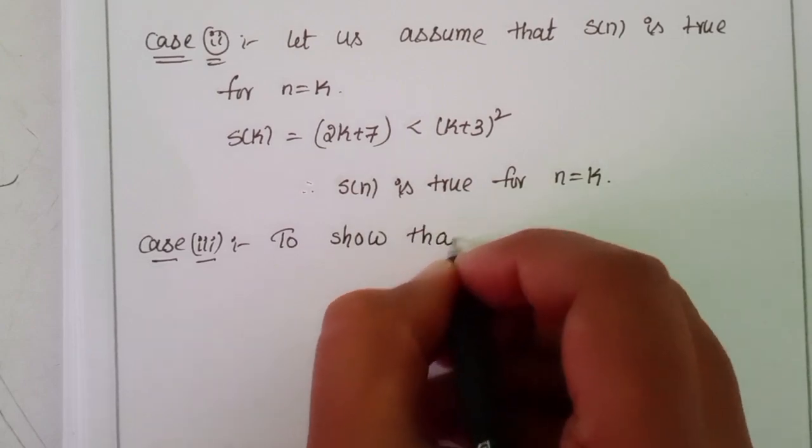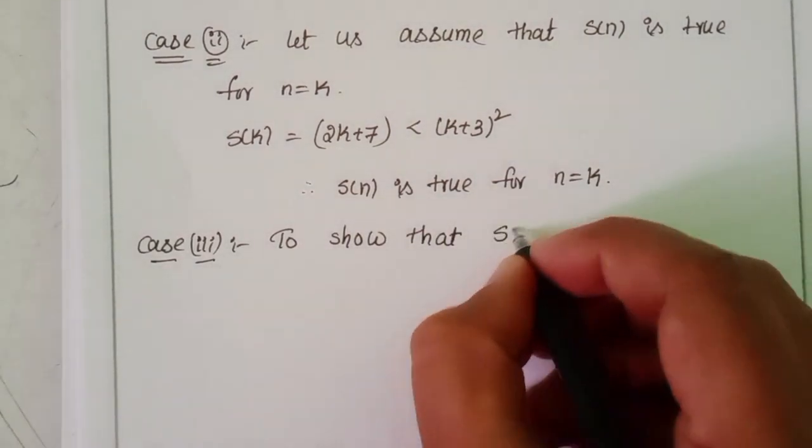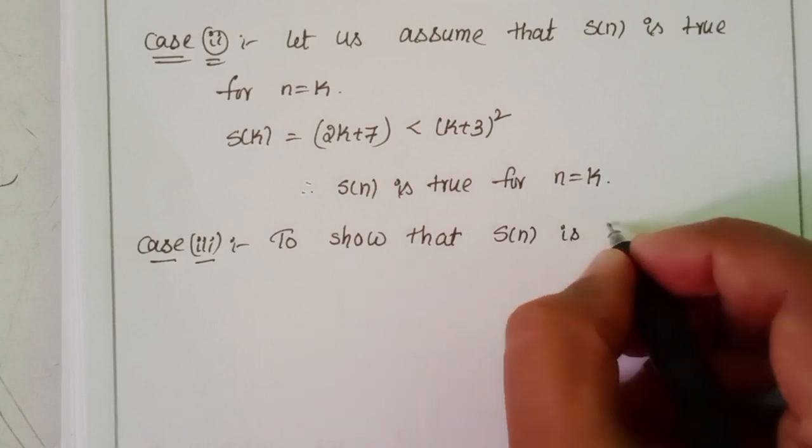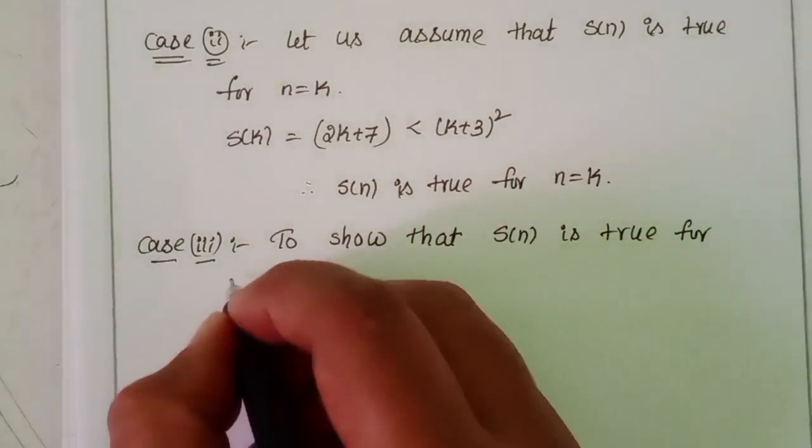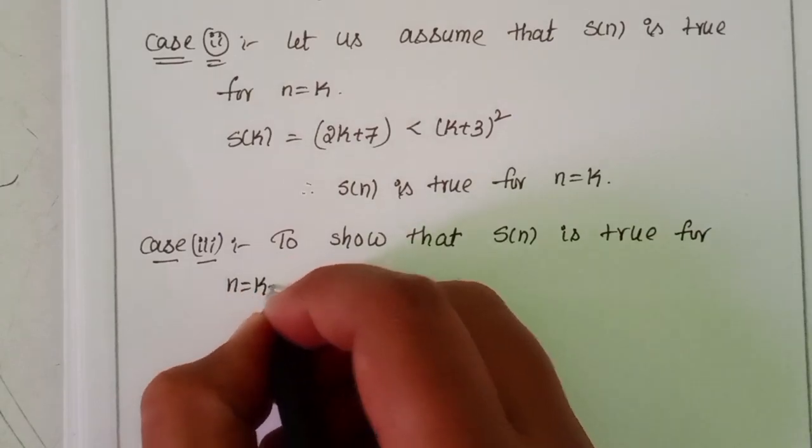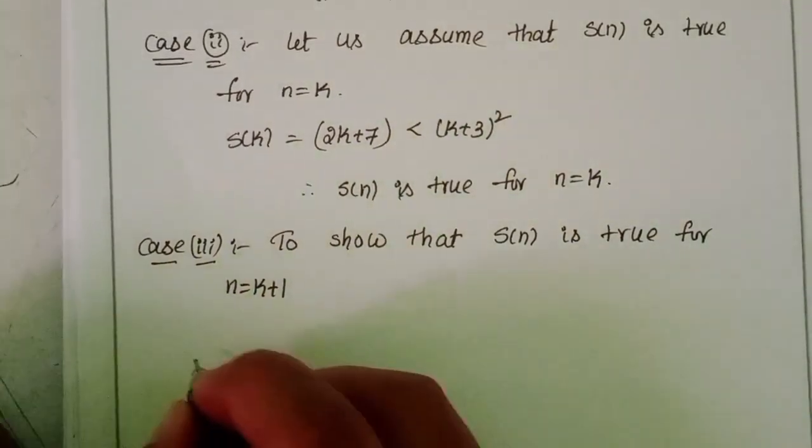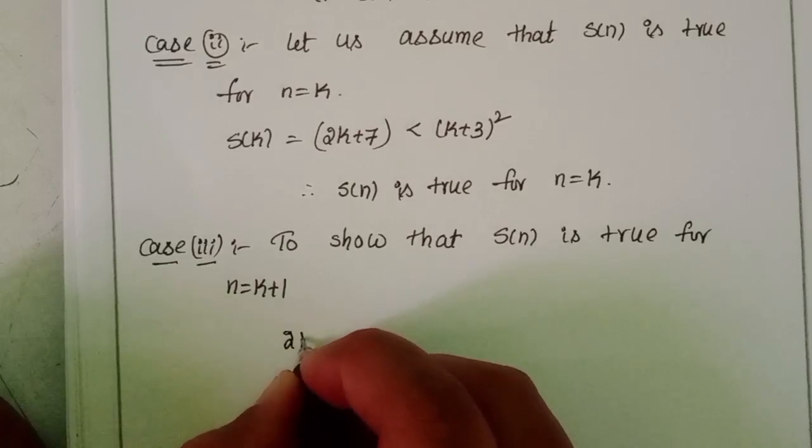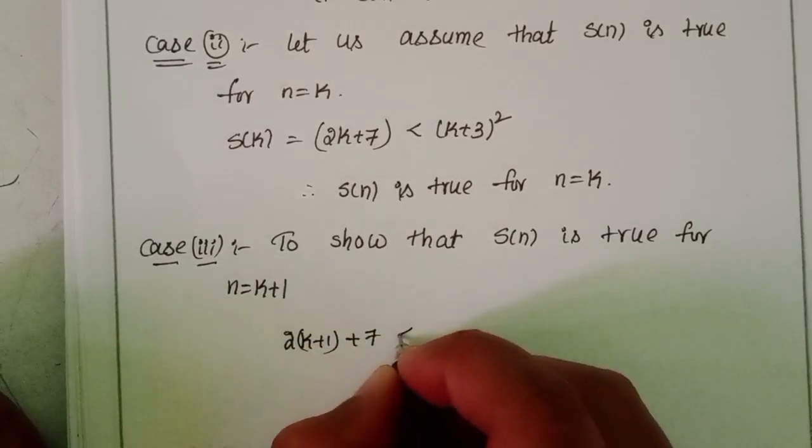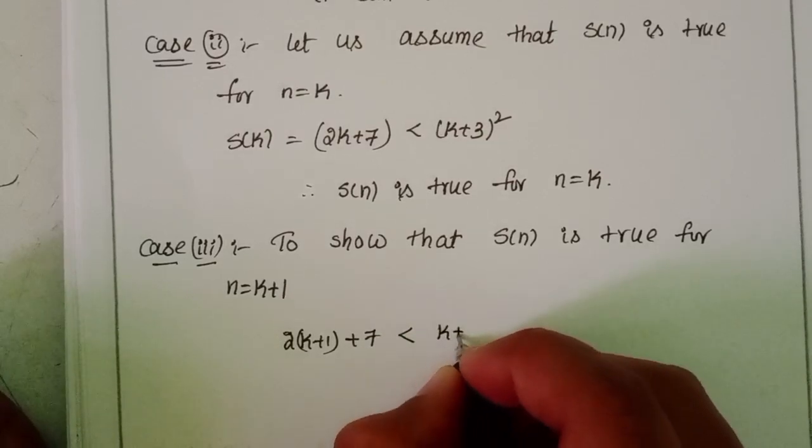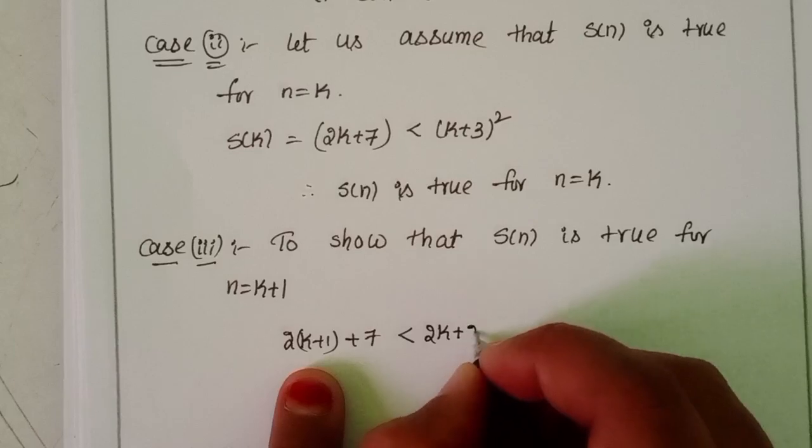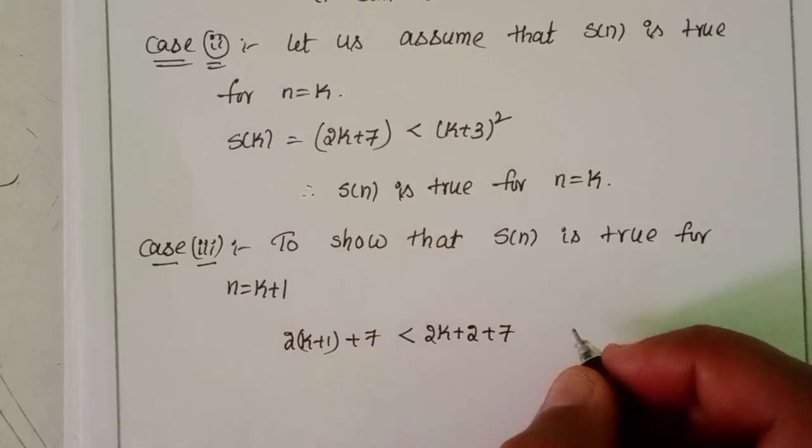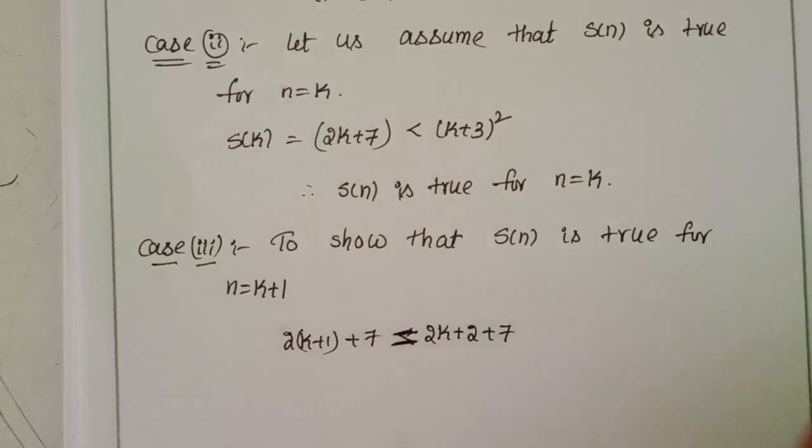See here: 2 into k plus 1 plus 7 is less than k plus... Here 2k plus 2 plus 7, not less than equal to, okay? Can I write this one 2k plus 7 plus 2?